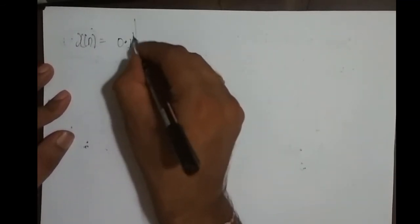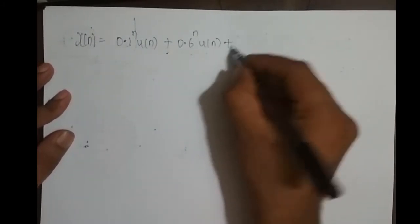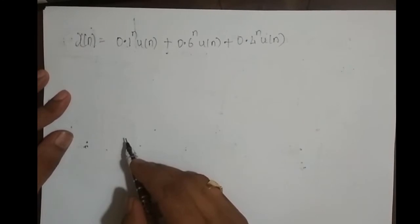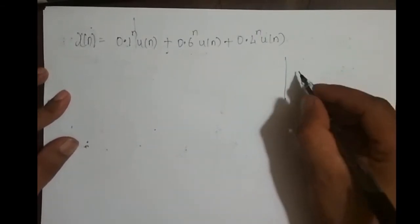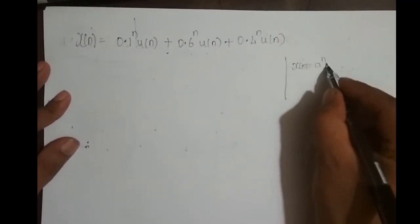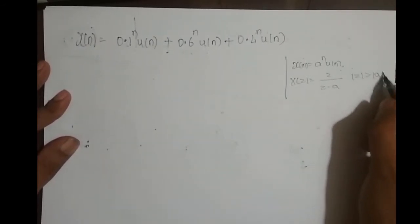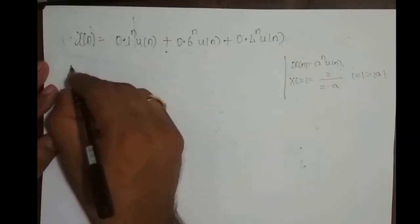Now I want to make a few more points on ROC. Consider an infinite-length right-sided sequence: x(n) = (0.1)^n·u(n) + (0.6)^n·u(n) + (0.4)^n·u(n). I want to find its Z-transform and ROC. We already have the standard result: the Z-transform of a^n·u(n) is z/(z−a) with ROC: |z| > |a|. Applying that result here, the Z-transform is the sum of the individual terms.